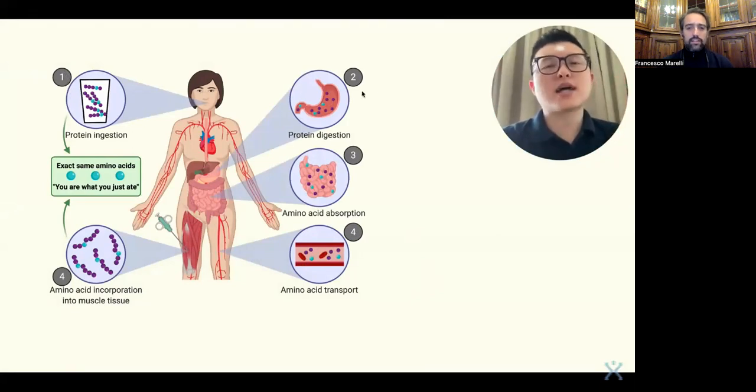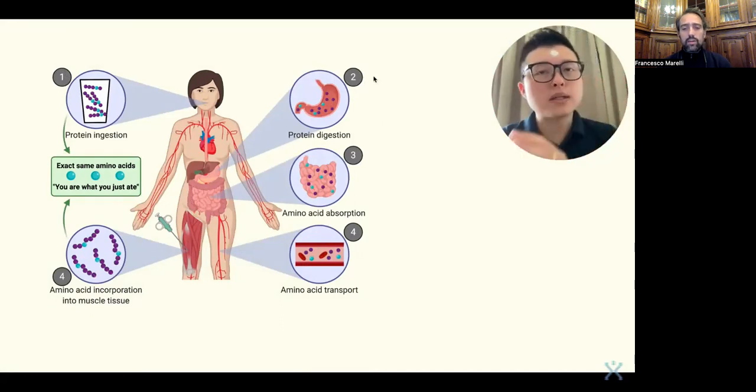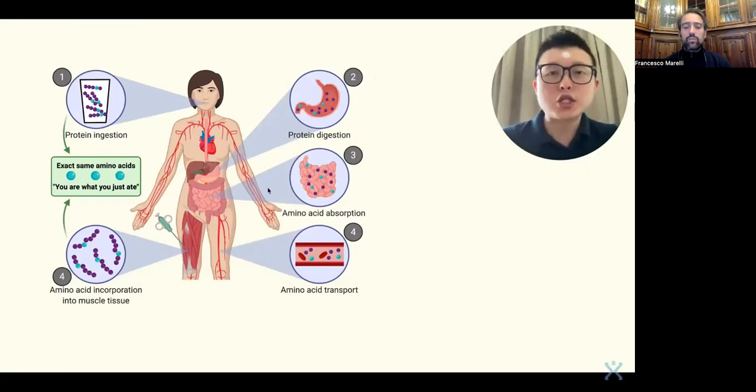When the food enters my stomach, it goes to stage number two. That is the protein digestion. When the protein is being broken down into amino acids by our stomach acid, it goes into our small intestine. And then it is ready to be absorbed. This is stage number three, the amino acid absorption.